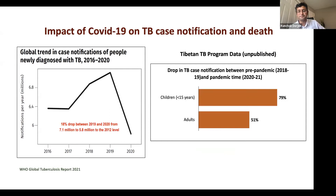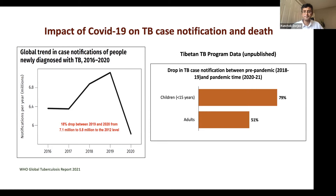The WHO global TB report gives only overall estimates, so I looked at how TB case notification fared for specific vulnerable populations like children. In the Tibetan program in India, we assessed the data and found that in adults the decline in case notification between pre-pandemic and pandemic eras was 51%, but for children it was 79%. We're now analyzing data for the district of Kangra to better understand how notification decline differed across populations based on vulnerability.